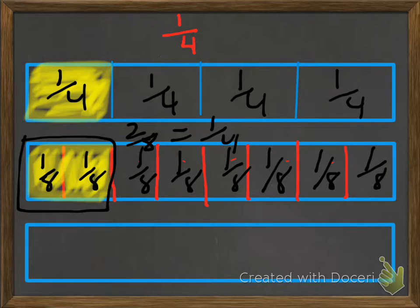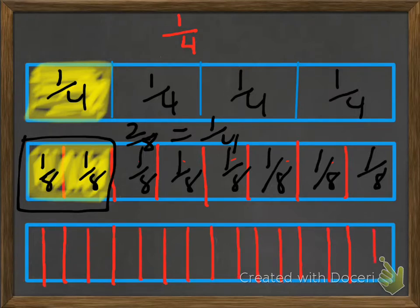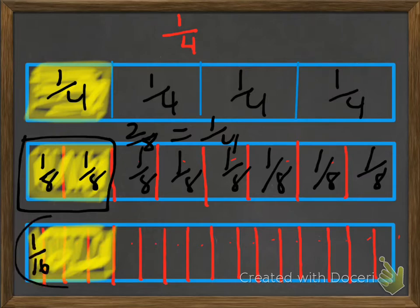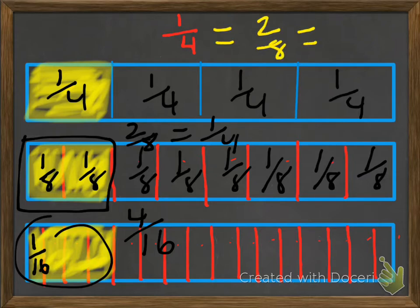Let's try one more. We start with our fourths, then cut into eighths, then cut these one more time. Now we have sixteen parts — each one is one sixteenth. We shade in the same amount of space as before, and we get four sixteenths. So one fourth is the same as two eighths, and that's the same as four sixteenths.